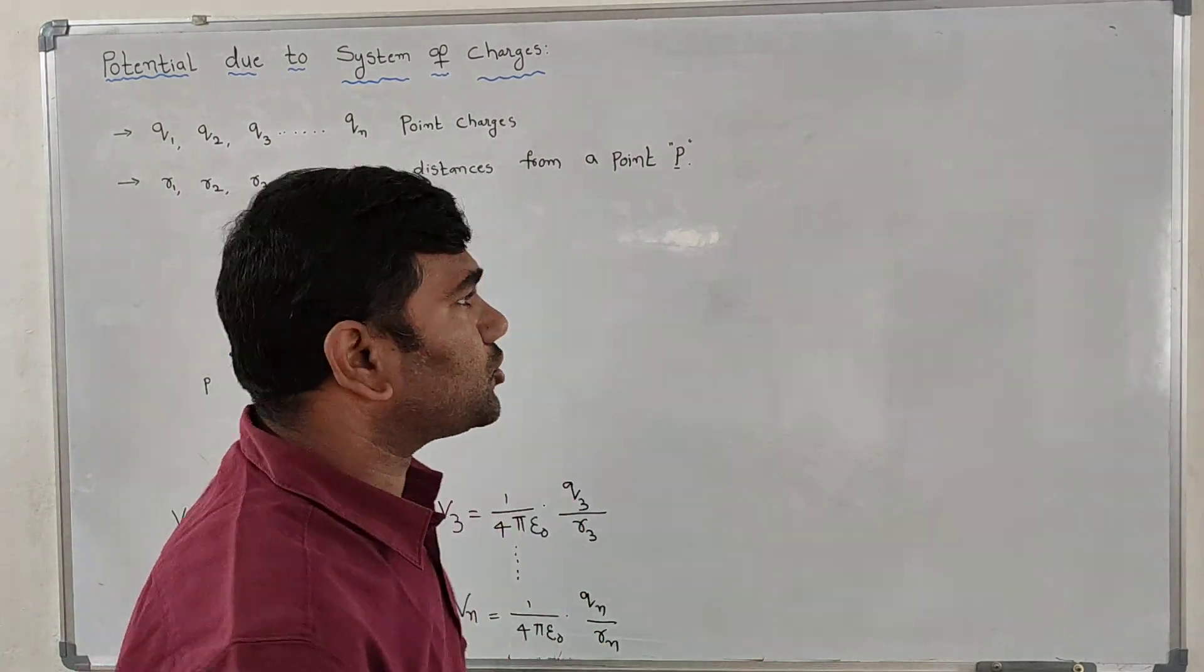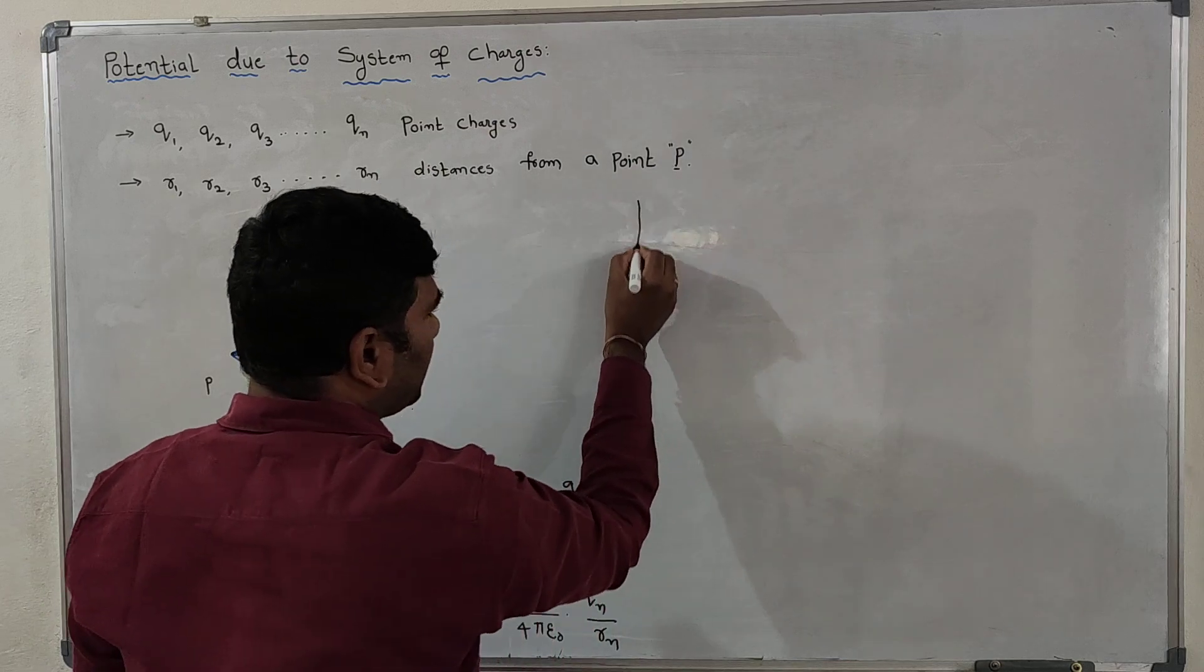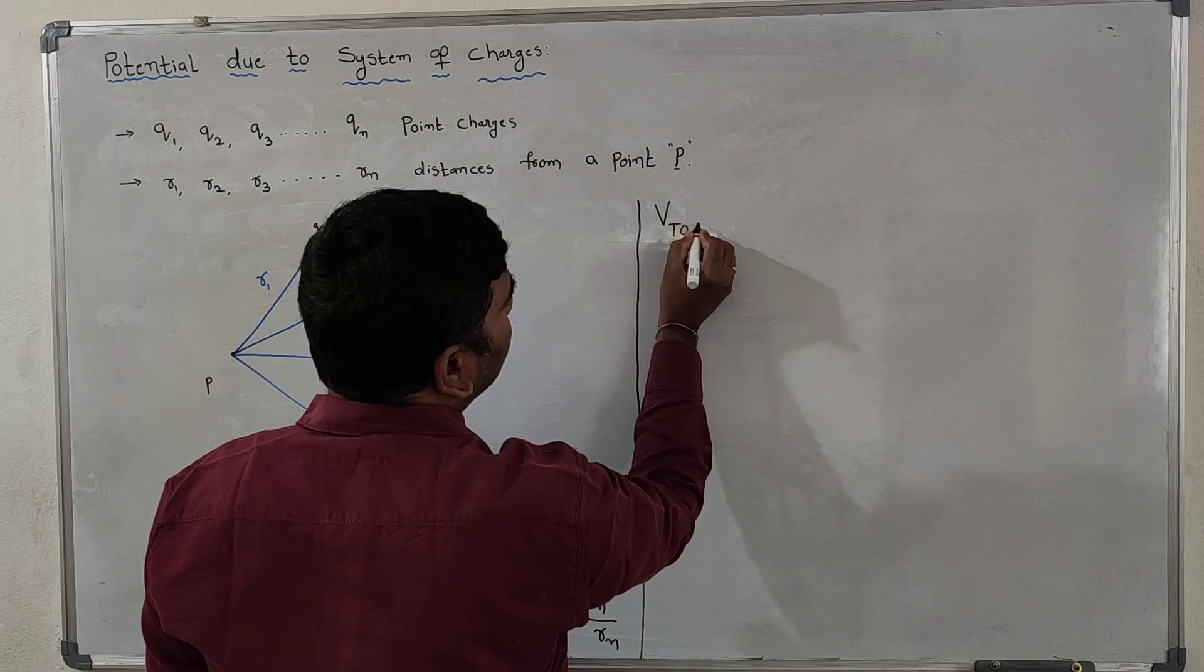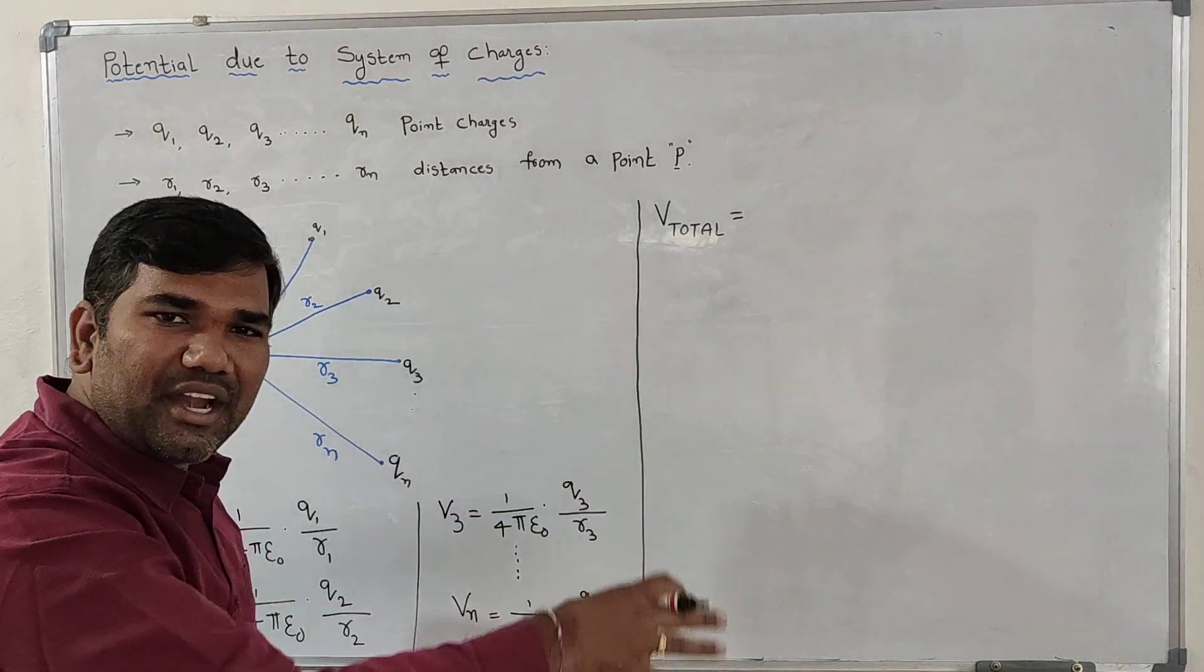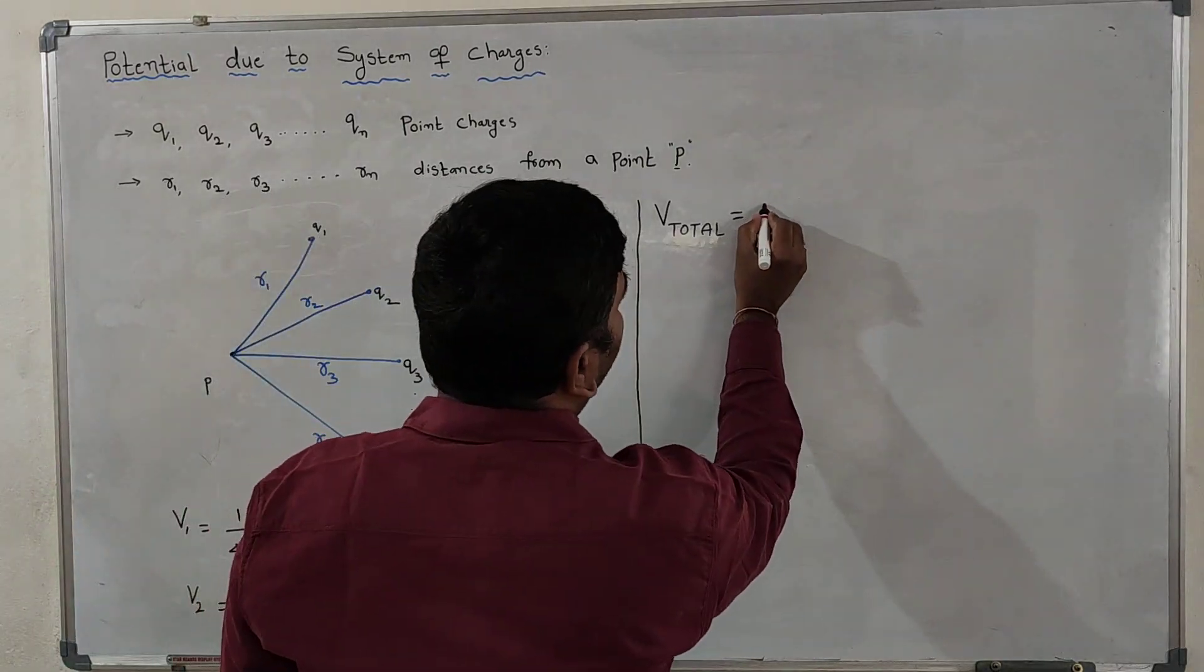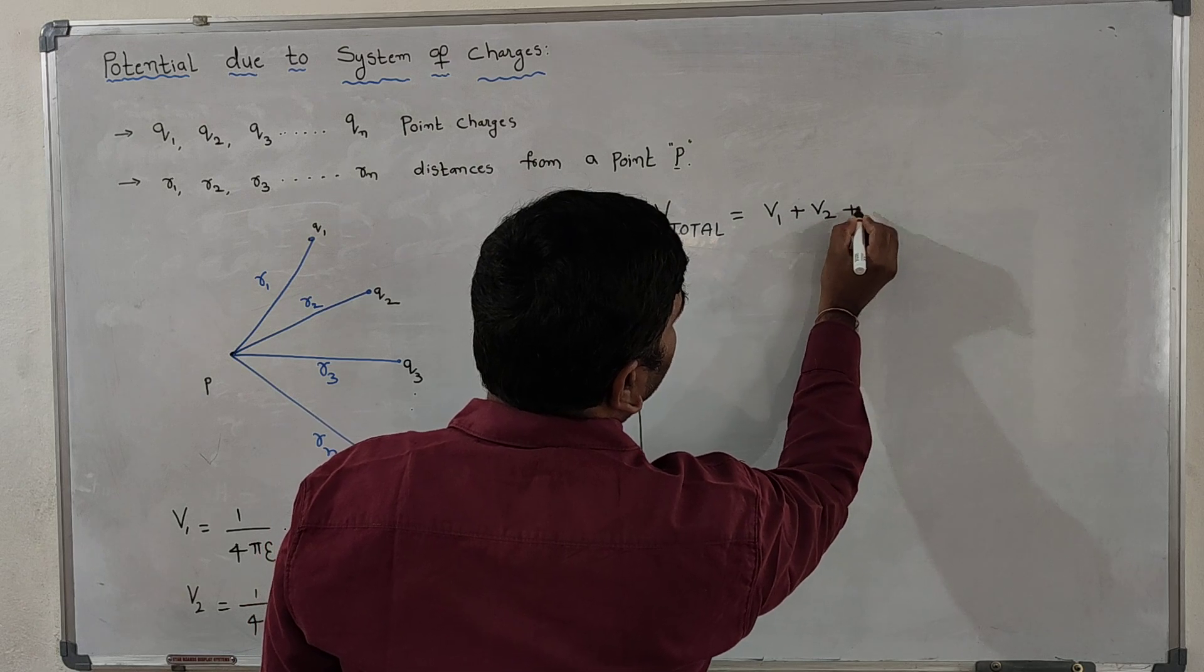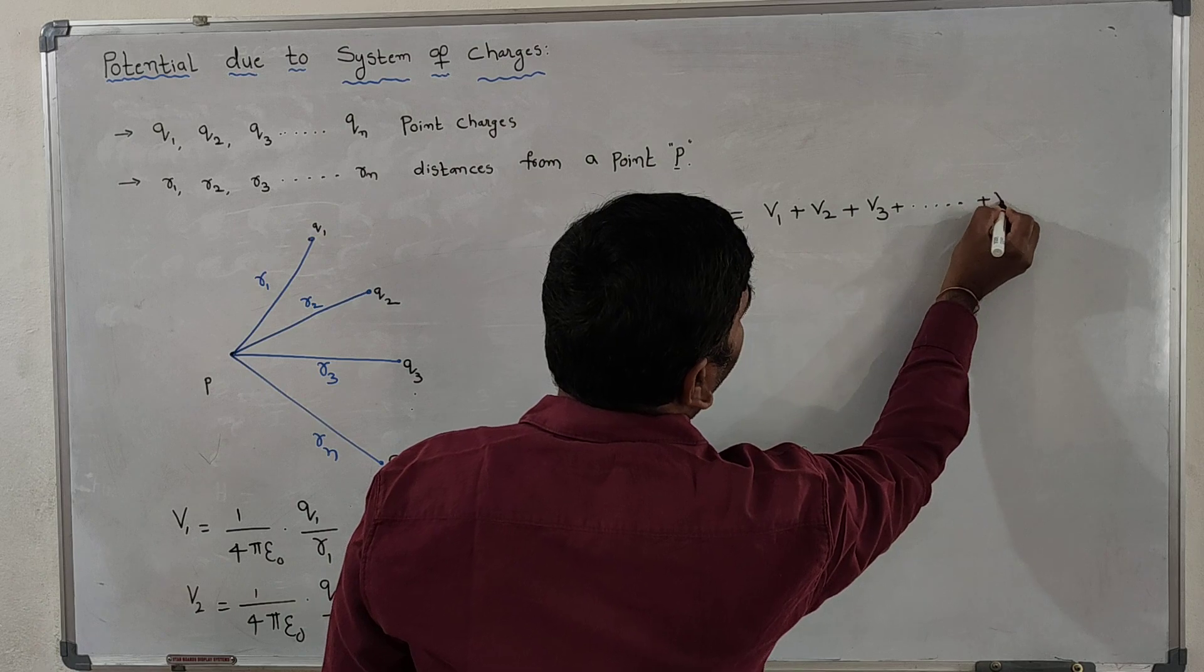all the charges together. So the total potential is nothing but the summation of all individual potentials, because potential is a scalar quantity.